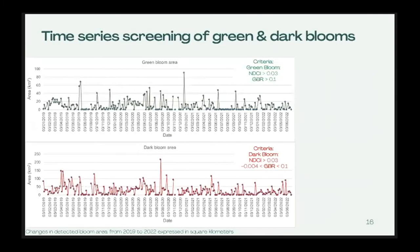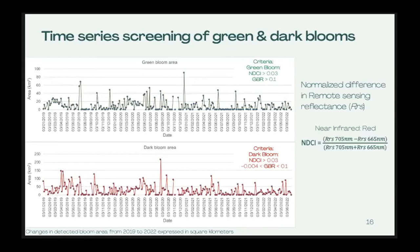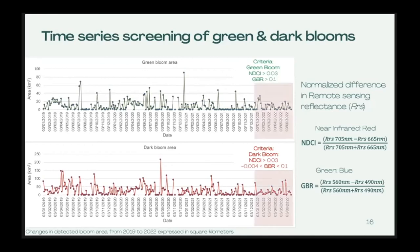Focusing on the green and dark blooms, we conducted a time series screening from 2019 to 2022 to identify potential periods of interest. To detect these blooms, we used the normalized differences in remote sensing reflectance values of specific band ratios — the NDCI, or near-infrared to red ratio, which looks at the chlorophyll content of the water, and the GBR, the green-to-blue ratio, which assesses how green the water is. Results show monthly changes in bloom area expressed in square kilometers over time from 2019 to 2022. This data still needs further visual checking for cloud shadow, but based on initial results we focused on 2022 due to the availability of recent in-situ data for ground-truthing purposes.